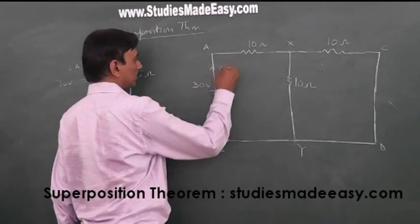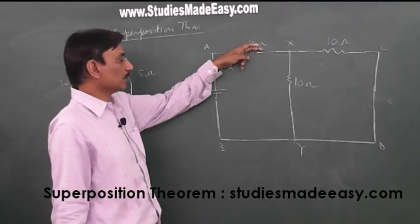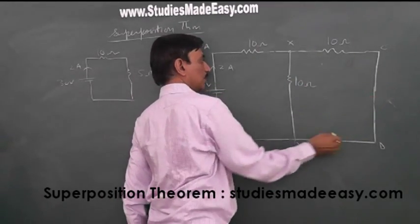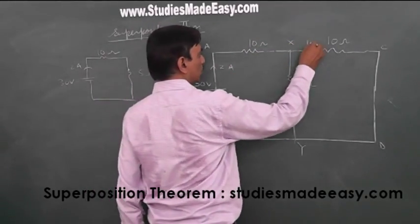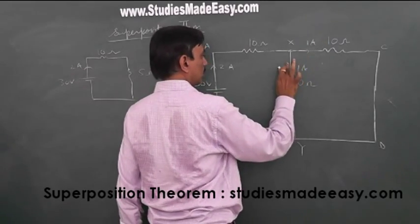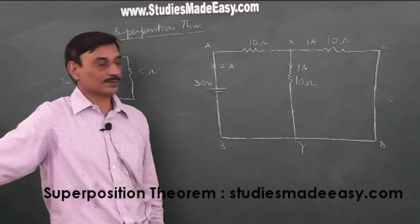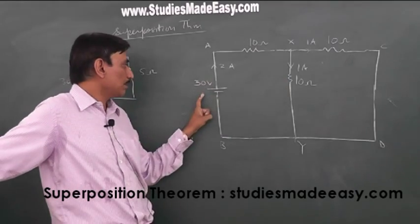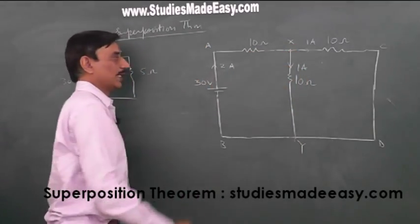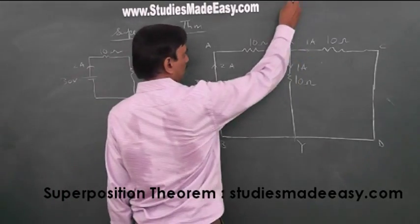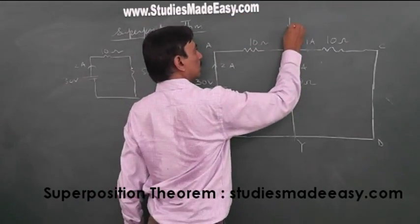So 2 ampere current comes out from here. This is the equivalent circuit I have drawn. When 2 ampere comes from here and reaches this node, it has two paths with the same resistance — this and this. So obviously, since both resistances are the same, 1 ampere goes this way and 1 ampere goes the other way. We are bothered about finding the current in arm XY, so the contribution of current by the 30V battery in this arm is 1 ampere.